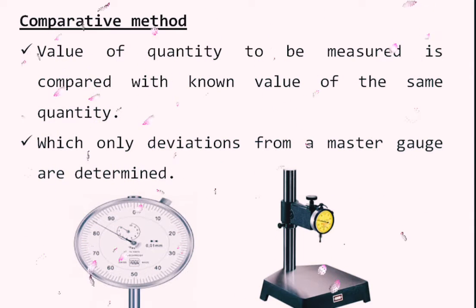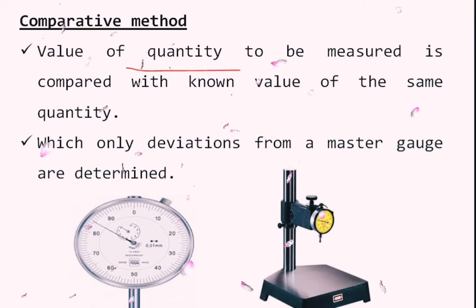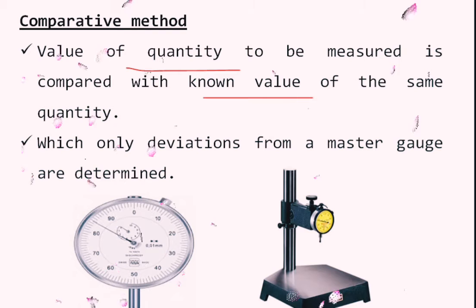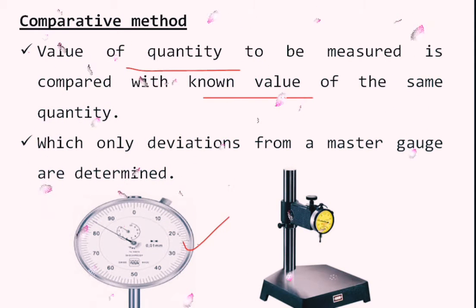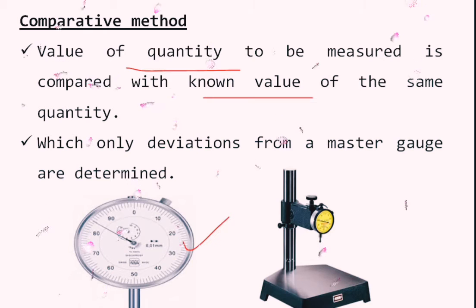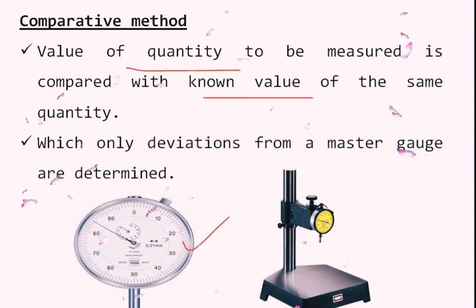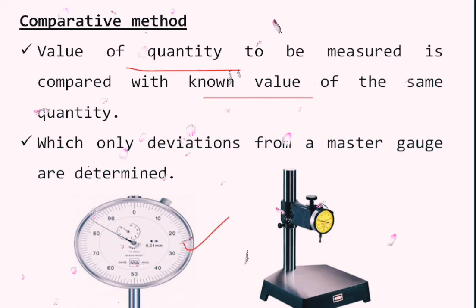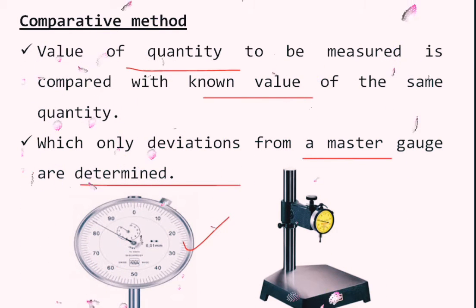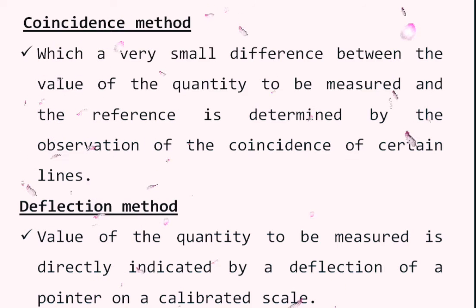The comparative method: here the value of the quantity to be measured is compared to a known value of the same quantity. A dial gauge is used, but it does not give the absolute value of the component — it helps compare whether the value is correct. You first set the instrument using slip gauges and then compare the component to determine deviations from the master gauge.